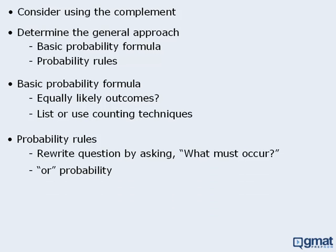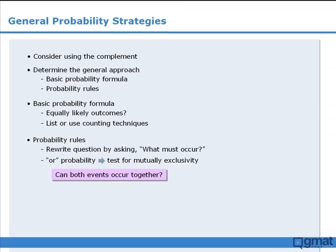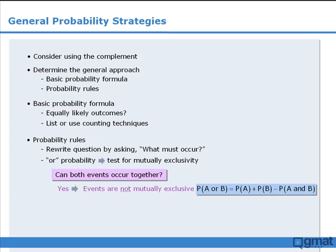If the solution involves an OR probability, determine whether the events are mutually exclusive by asking the question, does the occurrence of one event affect the probability of the other event? If the answer is yes, then the events are not mutually exclusive, and you should use this formula. If the answer is no, then the events are mutually exclusive, and you should use this formula.